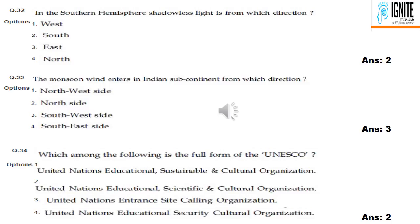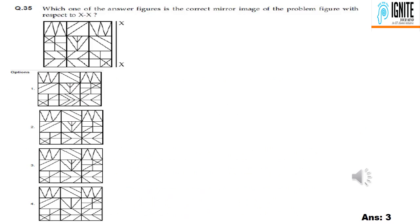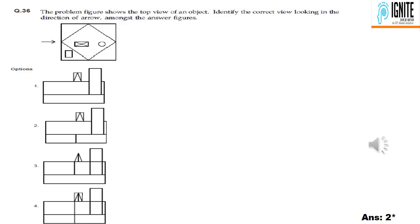Question 34: what is the full form of UNESCO? United Nations Educational, Scientific and Cultural Organization — option 2. Question 35: front view, just turn right — option 3 is correct. Question 36: we have a front view — it is correct.